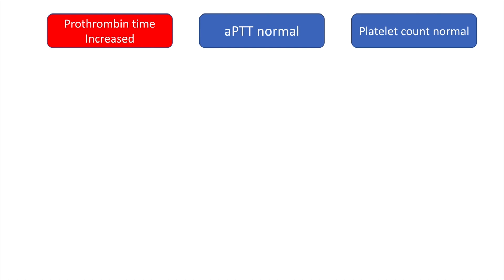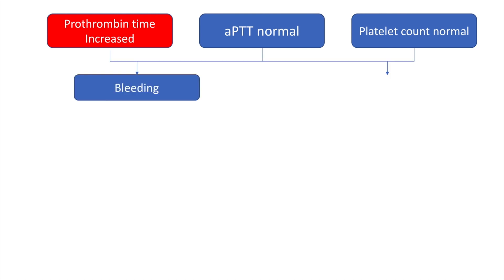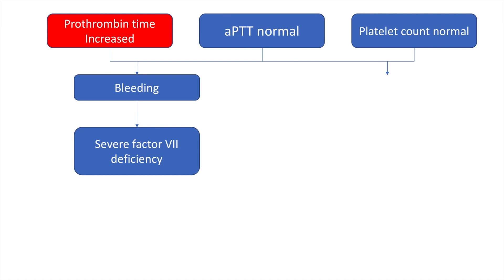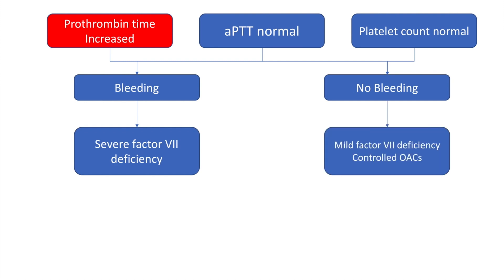In the first scenario, the prothrombin time is increased, the activated partial thromboplastin time is normal, and the platelet count is normal. If the patient is bleeding, it is severe factor 7 deficiency. If the patient is not bleeding, it is mild factor 7 deficiency, or the patient may be on oral anticoagulant medication.